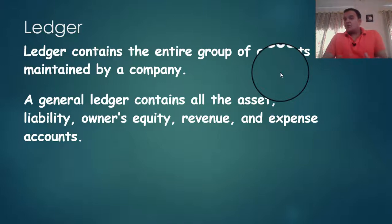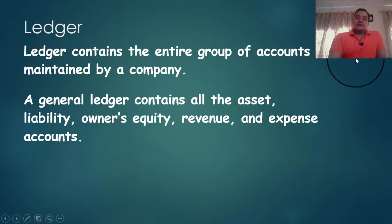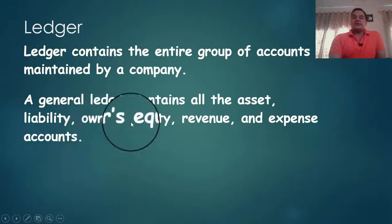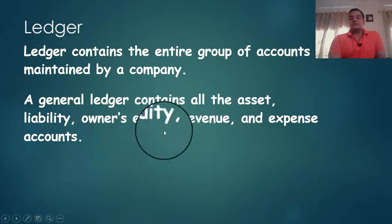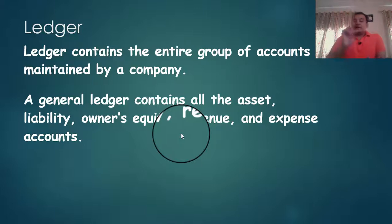Always remember, the ledger is a book which contains all accounts. Sometimes students say 'ledger account' — ledger is not accounts. Ledger is the book in which all the accounts are maintained. A general ledger contains all the assets, liability, owner equity, revenue, and expense accounts. It will have all types of real account, personal account, and nominal account, and every account will be unique.